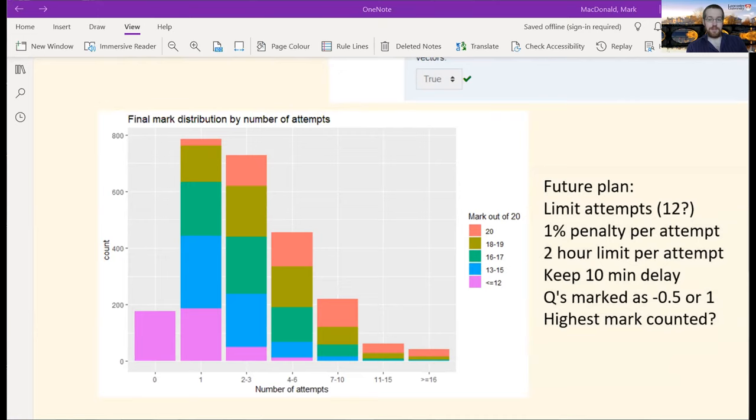So I'm planning on tweaking a couple of the things in future years, like limiting the attempts to 12 - I mean few students took more than 10 attempts, but some did - have a small penalty for each attempt, I think just to encourage them to try a bit harder on each one, and a couple of other tweaks. So that's the data.